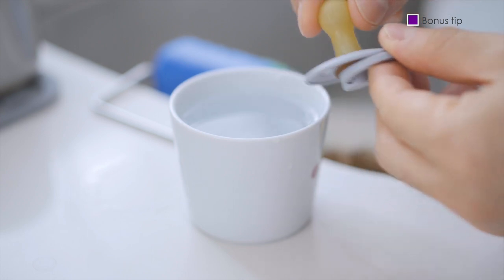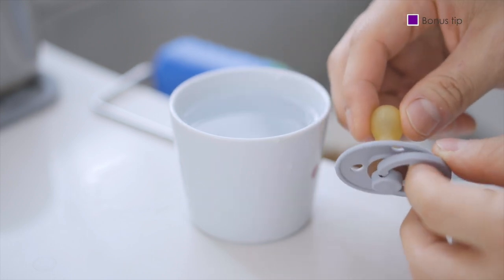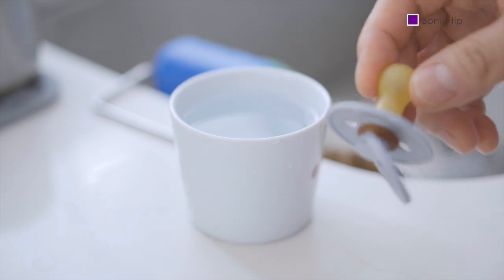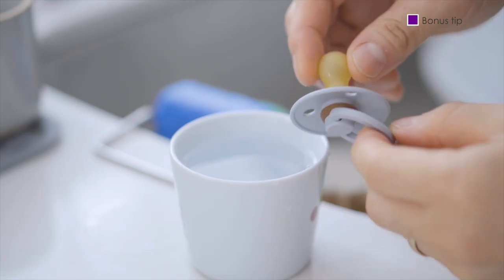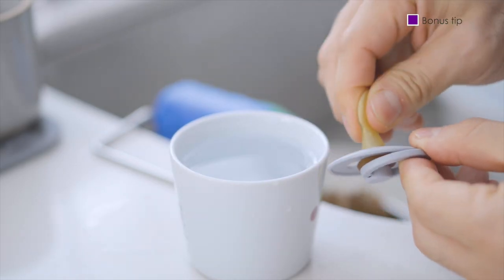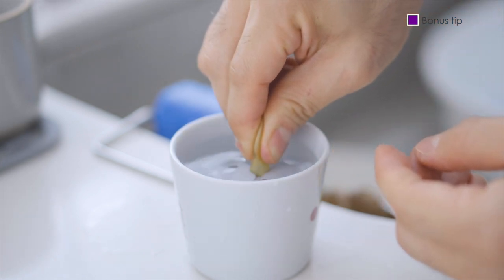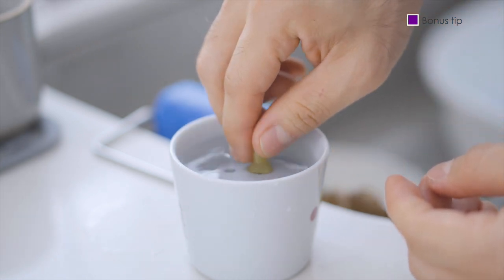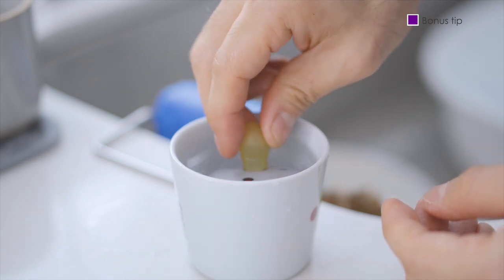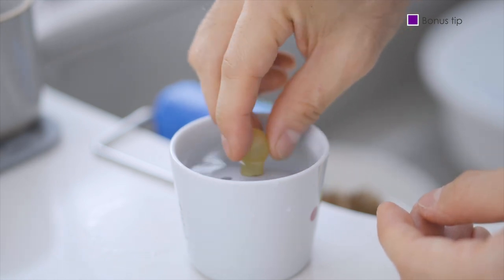To create the icy pacifier, what you'll be doing is squeezing the pacifier nipple and placing it inside water so that the water is pulled into the nipple. Keep the water in the nipple about 70% so it gives the water space to expand as it turns into ice so it doesn't rip the pacifier nipple.